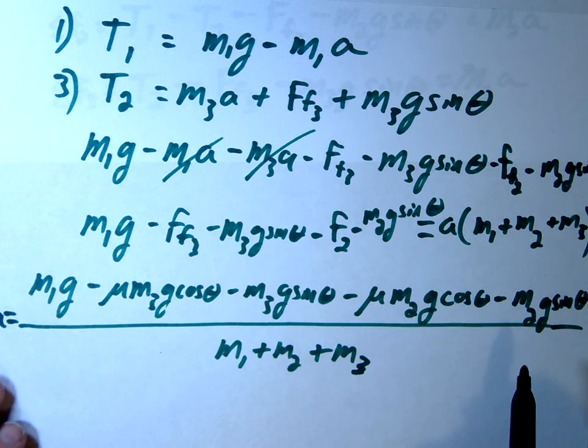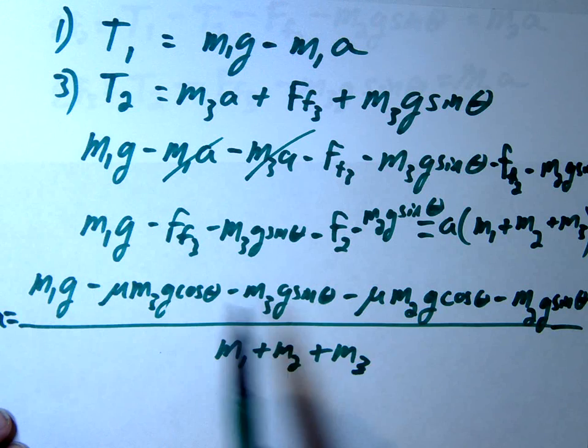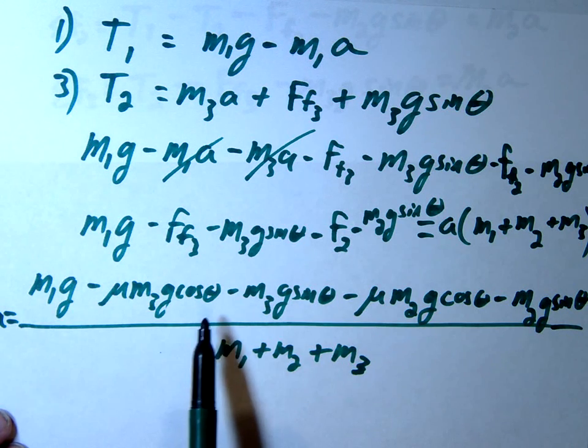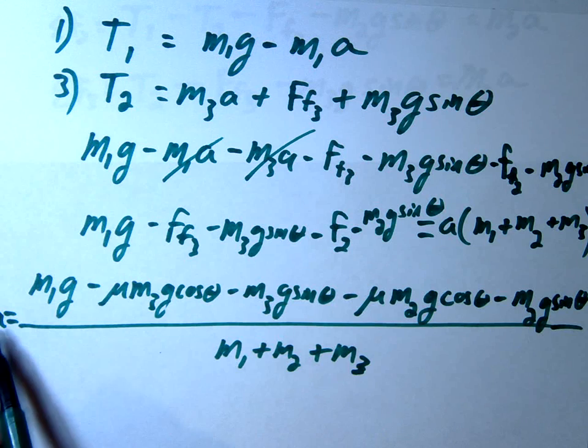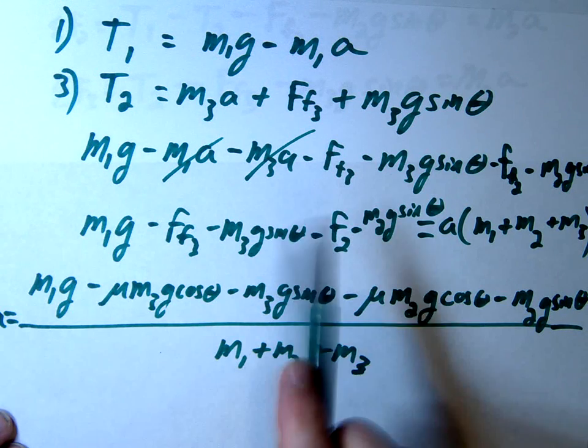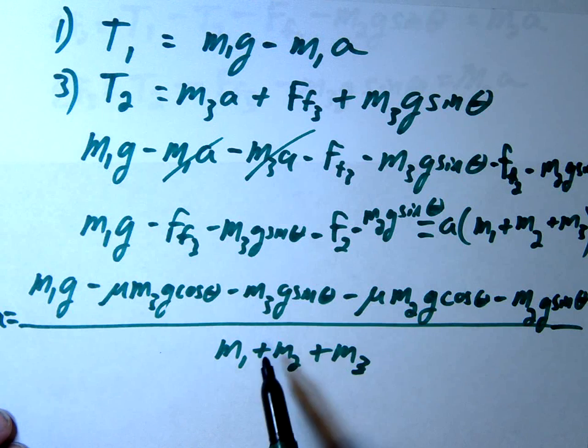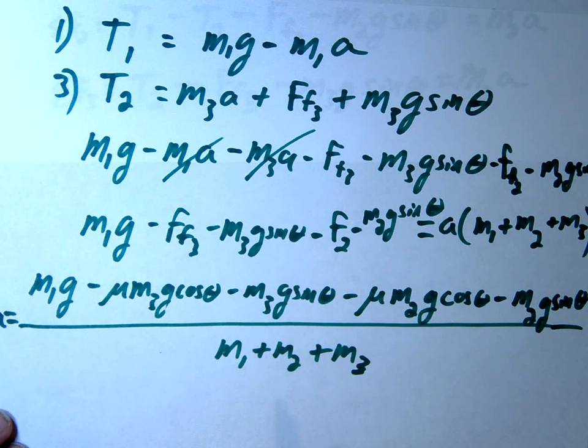Again, they would never really ask you to do all this algebra. Probably they might simplify it and say it's moving at a constant velocity, which would make A equal to zero, and that would simplify some things. Maybe they ask for the masses. Maybe they make all the masses the same. That would simplify it as well. Or maybe it's even frictionless.